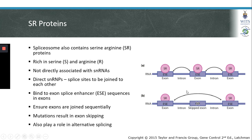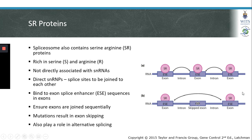Mutations in SR proteins can result in exon skipping. SR proteins also play an important role in alternative splicing, where some RNAs can be used to produce multiple different proteins by intentionally skipping certain exons. SR proteins are involved in regulating that process.